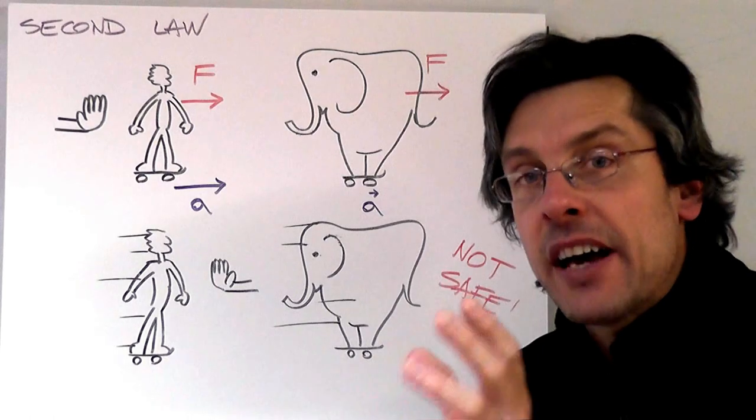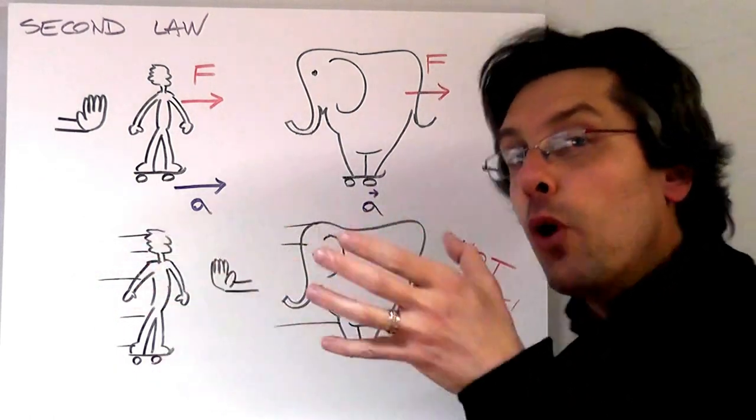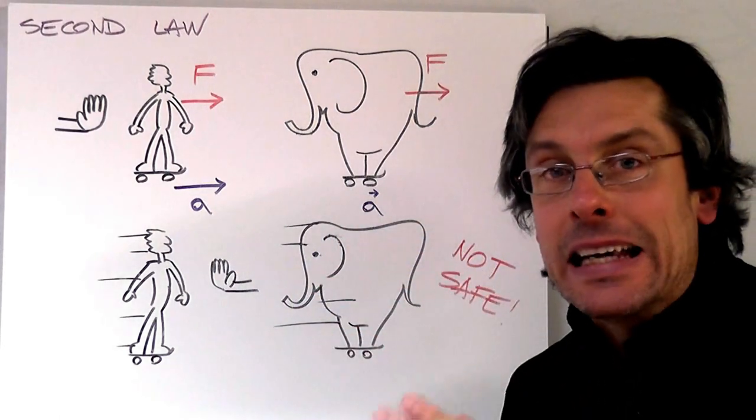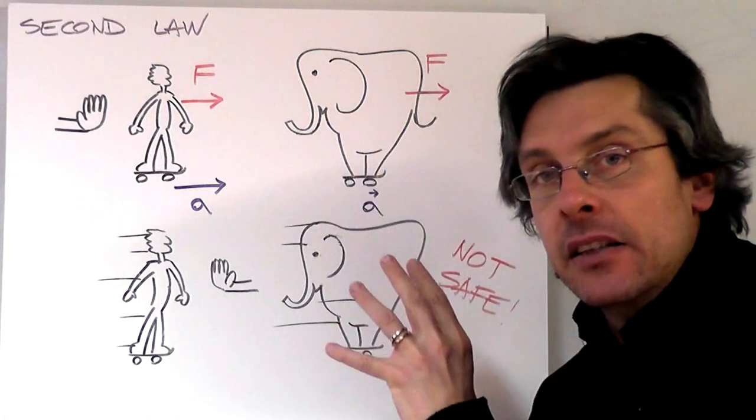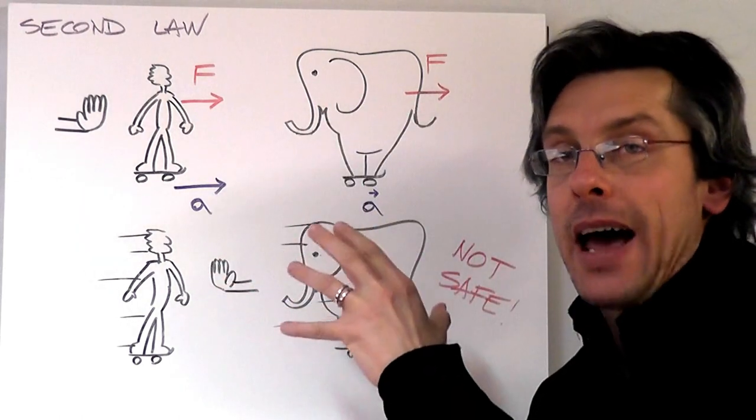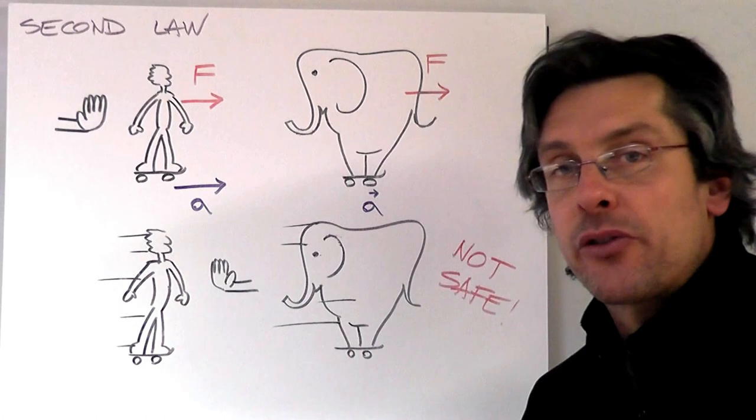On the other hand, if you have Eddie the Elephant moving at exactly the same speed towards you, maybe it's not the wisest idea to try to stop him. Again, the difference is given by the huge mass of Eddie compared to the one of your friend.